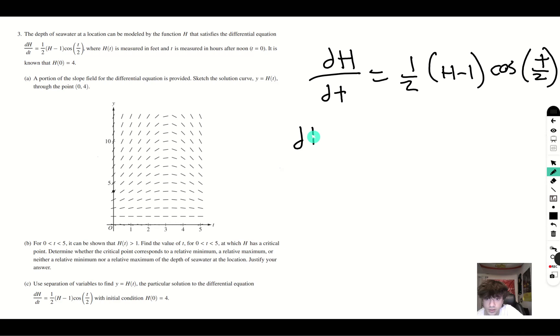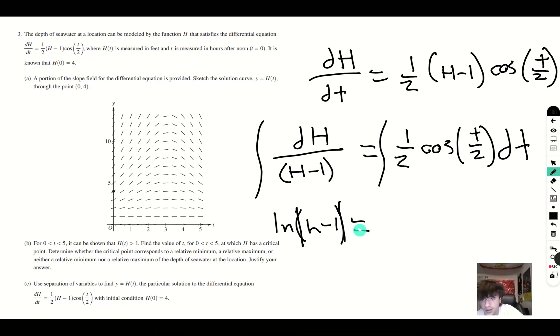So let's separate our variables dh over h minus one is equal to one half cosine t over two. Now we can integrate both sides. This gives you natural log of h minus one. And this you do a u sub where you set u as t over two, d u becomes one half dt. We have a one half dt, which we can solve for du. So then we get cosine u du. And the integral of cosine u du is sine of u and u is t over two. So we get sine of t over two. Make sure to add a plus c on one of the two sides as I'm doing here.